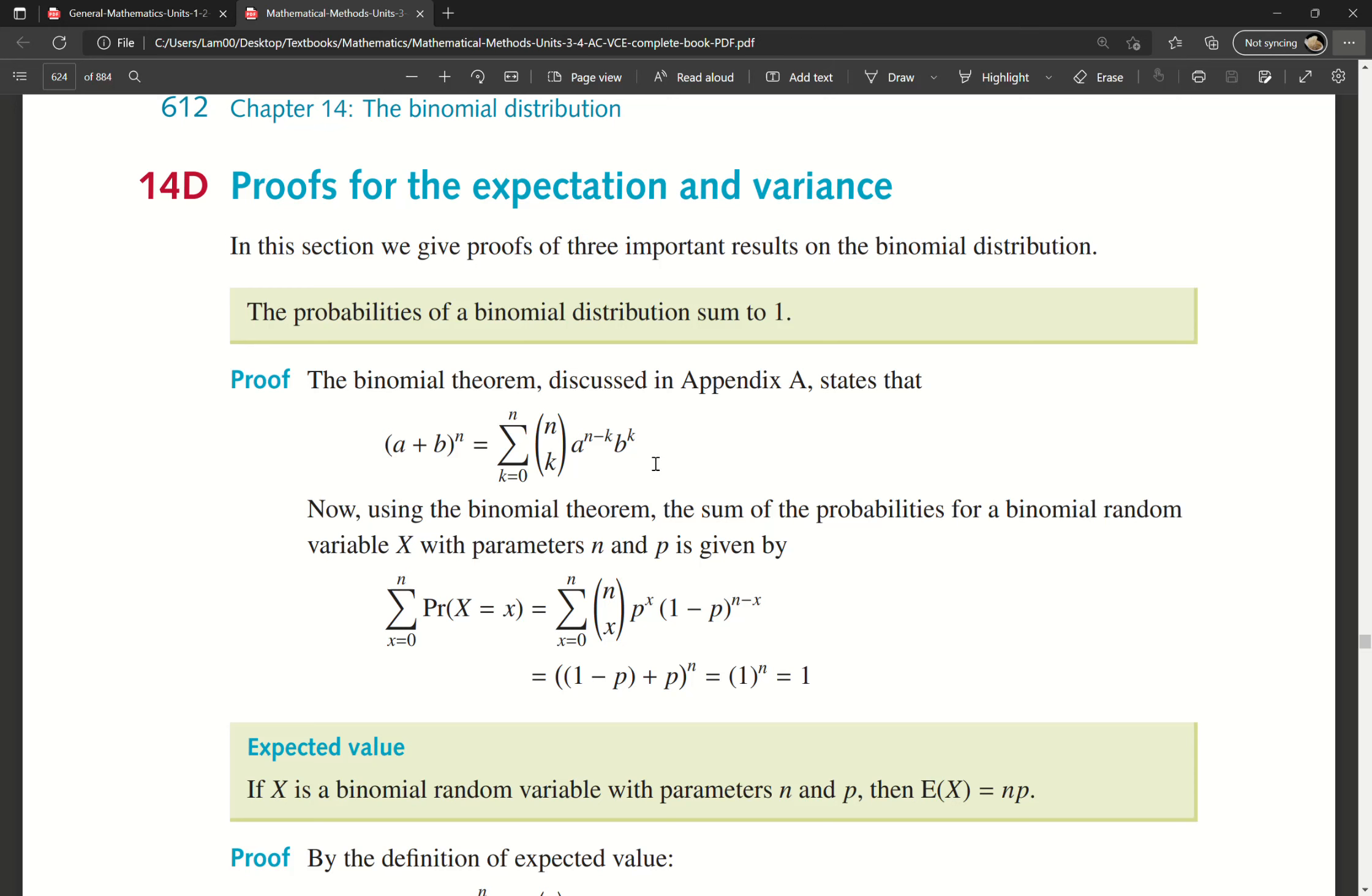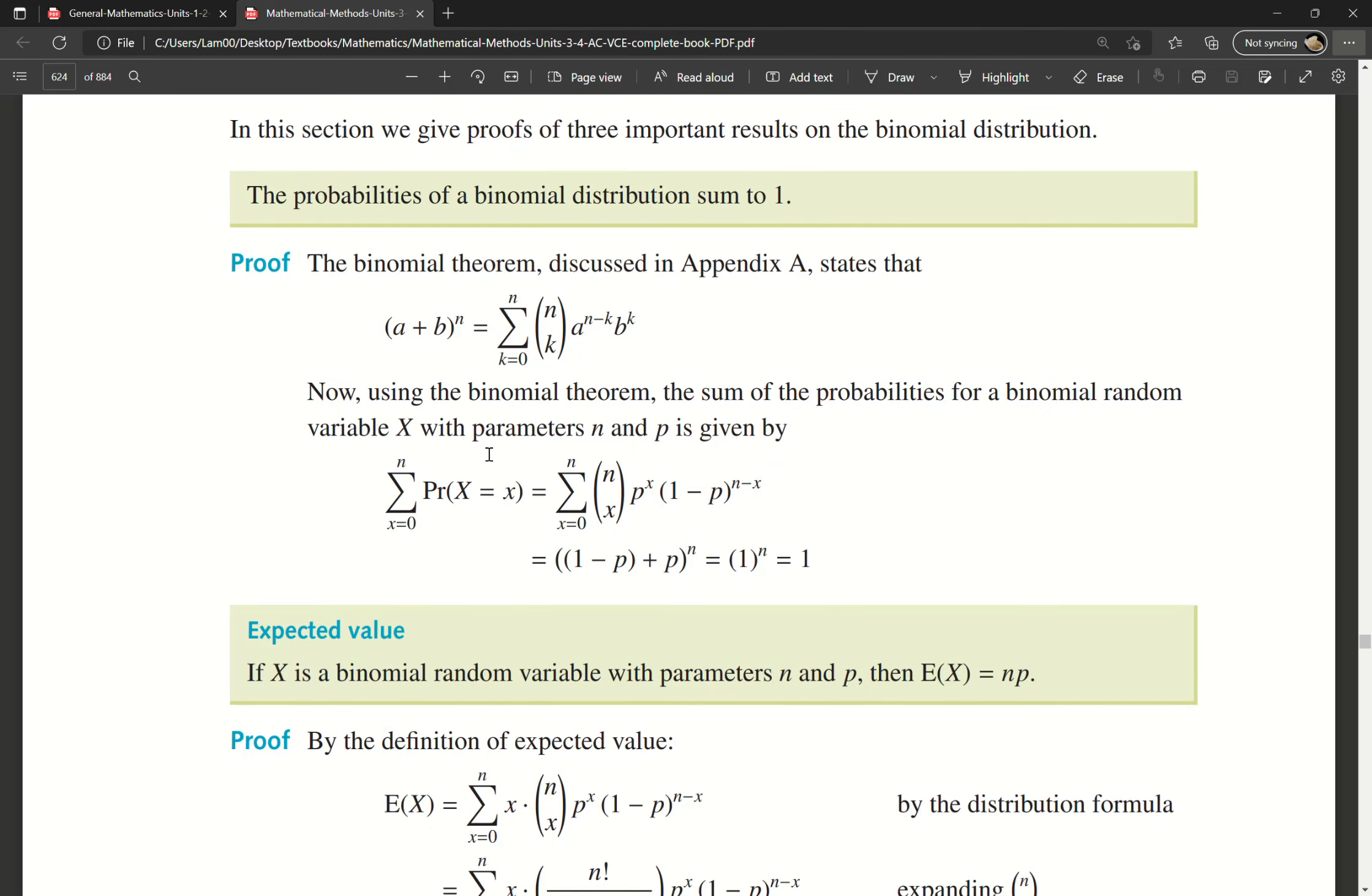You'll see it's very similar to our equation. In this situation, we're not using the binomial theorem in terms of (a + b)^n, but we're saying the probability of X. The parameters we've defined are n, the number of trials, and p, the probability.